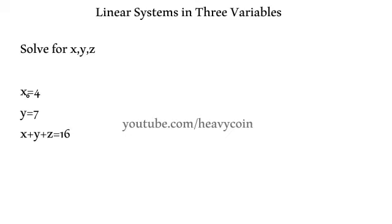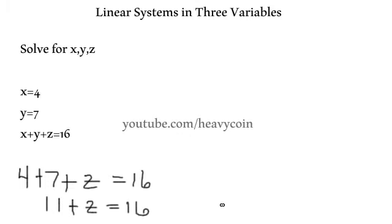Alright, so here's the system, and what we're going to do since we're already given x and y, all we need to do is find z in this problem. So I'm going to go ahead and substitute the 4 in for the x here. So 4 plus, we know what y is, y is 7, and z we don't know. So now we've got this equation here, we just need to solve for z.